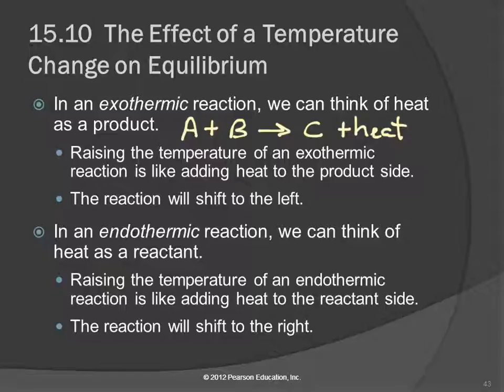So if we raise the temperature of an exothermic reaction, if we add heat to it, because that's how you raise the temperature of something, if we add heat energy, that's like increasing the concentration of a product. And what does that do to the equilibrium? It'll cause it to go the other way. So if we increase the temperature, we have to think of heat as being a product, and so we'll shift the reaction to the left.